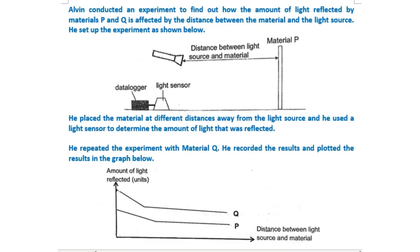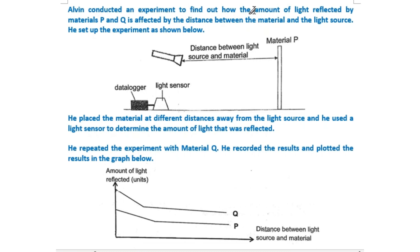Alvin conducted an experiment to find out how the amount of light reflected by materials P and Q is affected by the distance between the material and the light source. He set up the experiment as shown below.